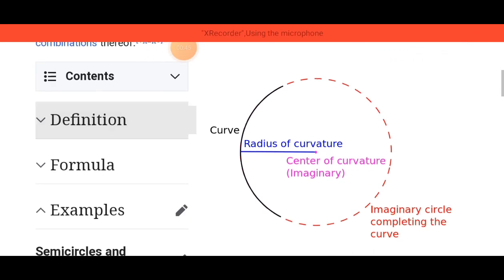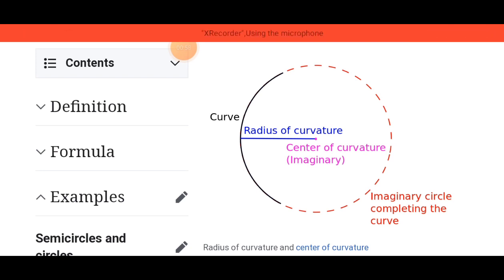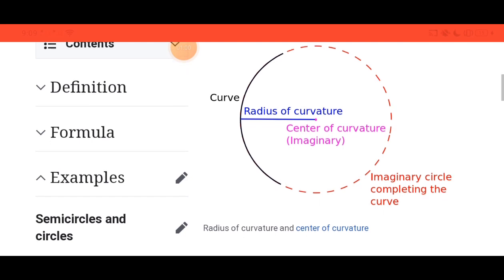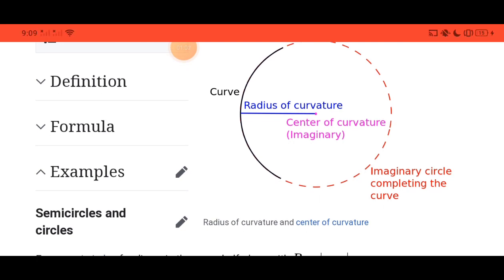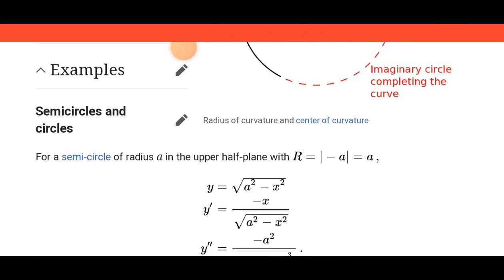In a graph of a curve, we have the radius of curvature, the center of curvature which is imaginary, and an imaginary circle completing the curve. Let's have an example for a semi-circle of radius a in the upper half plane.